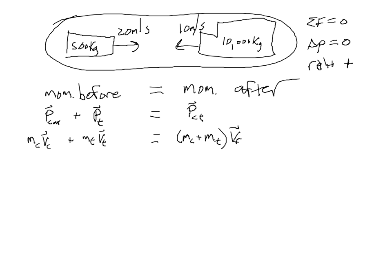Okay, mass of the car, that's 500 kilograms. The velocity of the car before the collision is 20 meters per second, and it's to the right, so that's a positive 20 meters per second. Then we'll add the mass of the truck, 10,000 kilograms times the velocity of the truck, that is a negative 10 meters per second.